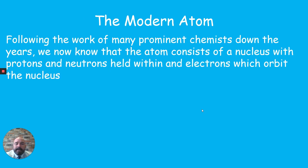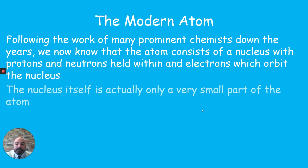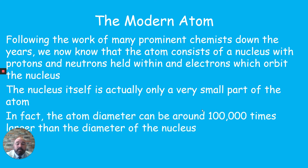Thinking about the modern atom — work from prominent chemists down the years has led us to understand that the atom has a nucleus containing protons and neutrons with electrons arranged in shells on the outside. The nucleus itself is only a very small part of the atom. In fact, an atom's diameter is around 100,000 times larger than the diameter of the nucleus.